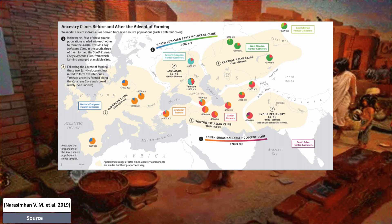This ancestry profile was formed more than 7,000 to about 6,000 years ago, and it is believed that these people spoke Proto-Dravidian, potentially Elamo-Dravidian. With the Indo-European steppe migration, the early Holocene clines are replaced with five new ones.